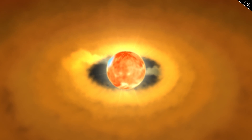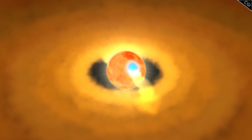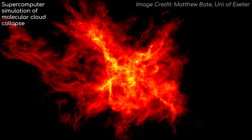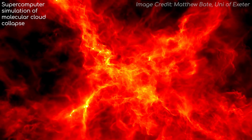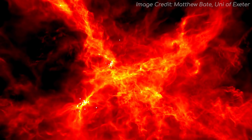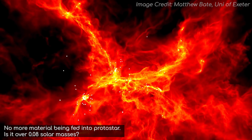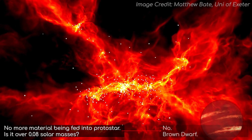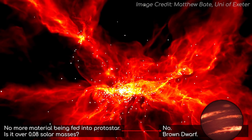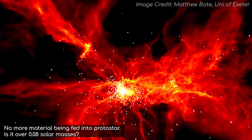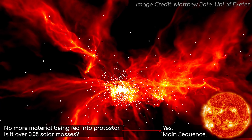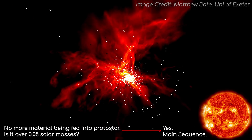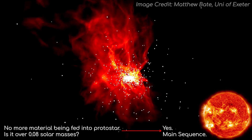Every star has these humble beginnings, but what happens next decides the fate of the protostar. The molecular cloud feeding into the protostar will eventually run out of material, or the protostar will be ejected away early in its protostar phase. If this happens before the protostar reaches 0.08 solar masses, the protostar will become a brown dwarf, or a failed star. Should the molecular cloud feed enough material into the protostar that its mass amounts to over 0.08 solar masses, the protostar will eventually become a main sequence star — the adulthood phase of being a star.